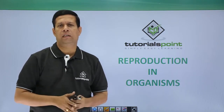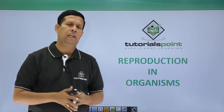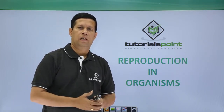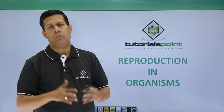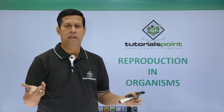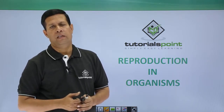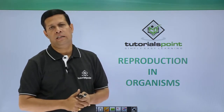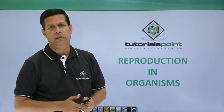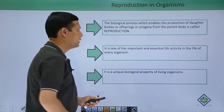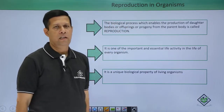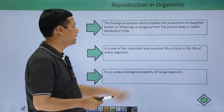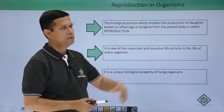Reproduction occurs in living organisms, so it is called a biological process. This biological process enables the production of daughter bodies or new bodies, also called progeny or offspring, from parent bodies. The biological process which enables the production of daughter bodies, offsprings, or progeny from the parent body — that is reproduction.